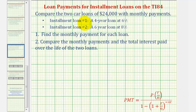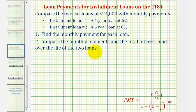In this example, we're going to compare two car loans of $24,000 with monthly payments. Installment loan one is a four-year loan at six percent. Installment loan number two is a six-year loan at eight percent. Number one, we want to find the monthly payment for each loan. Then number two, compare the monthly payments and the total interest paid over the life of the two loans.